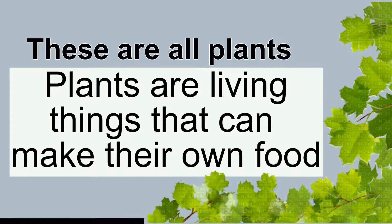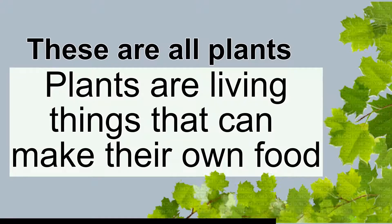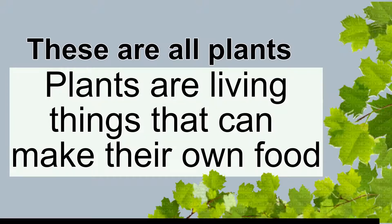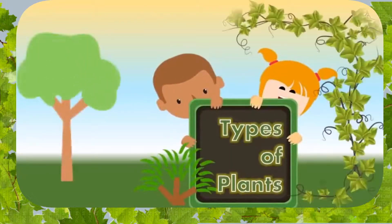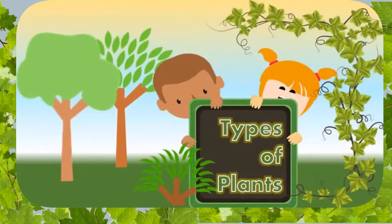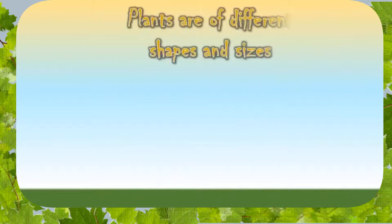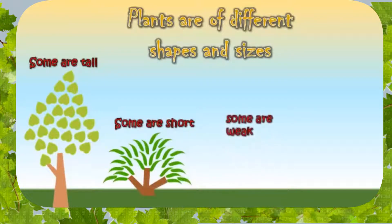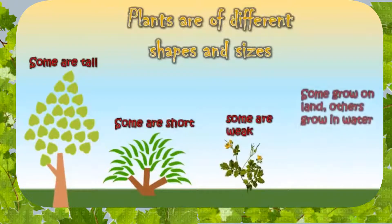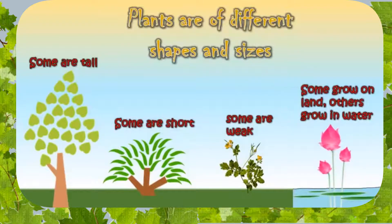These are all plants. Plants are living things that can make their own food. Plants are of different shapes and sizes. Some are tall, some are short, some are weak. Some grow on land, some grow in water.